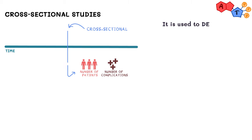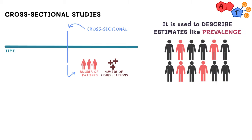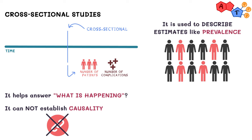They would be excellent to use to describe estimates like prevalence. These types of studies help answer what is happening. Note that we're not necessarily comparing anything just yet, we're just seeing how much of it is out there. So it's safe to say that you can't really establish any causality with this type of study.